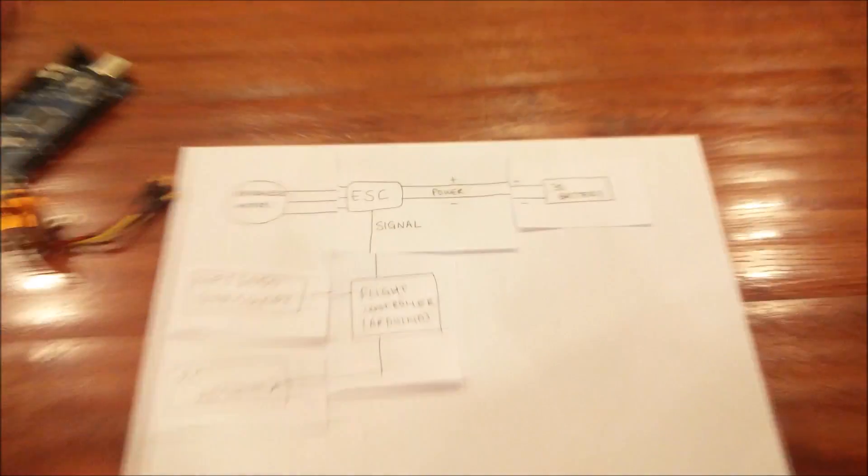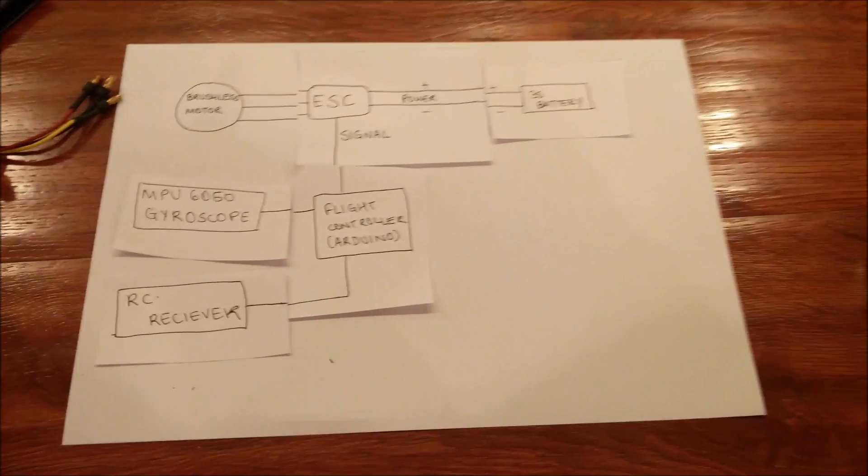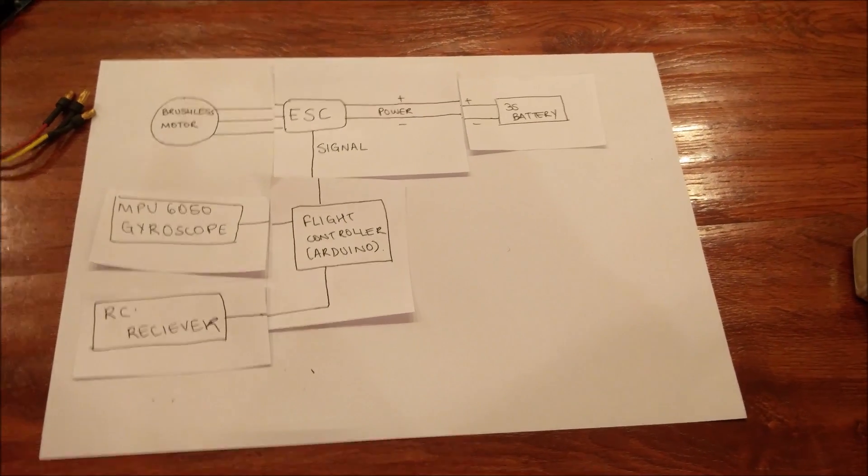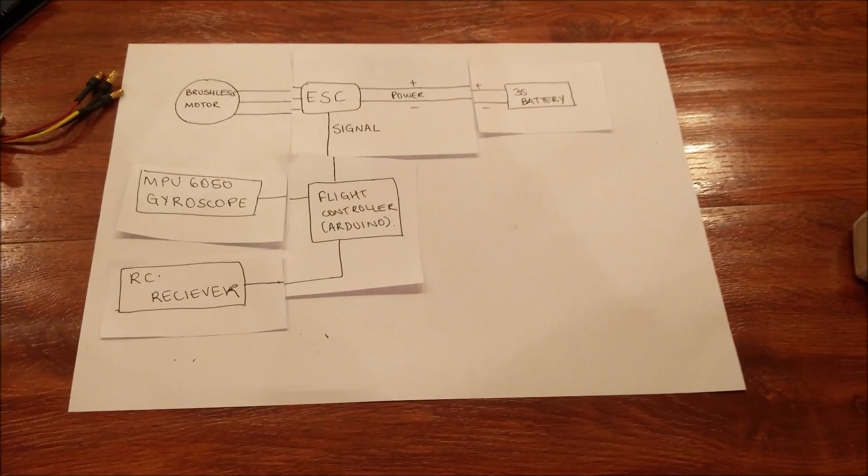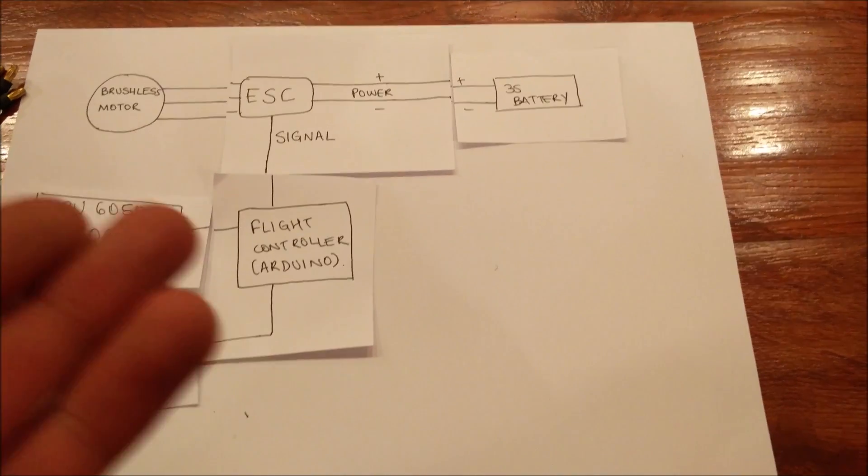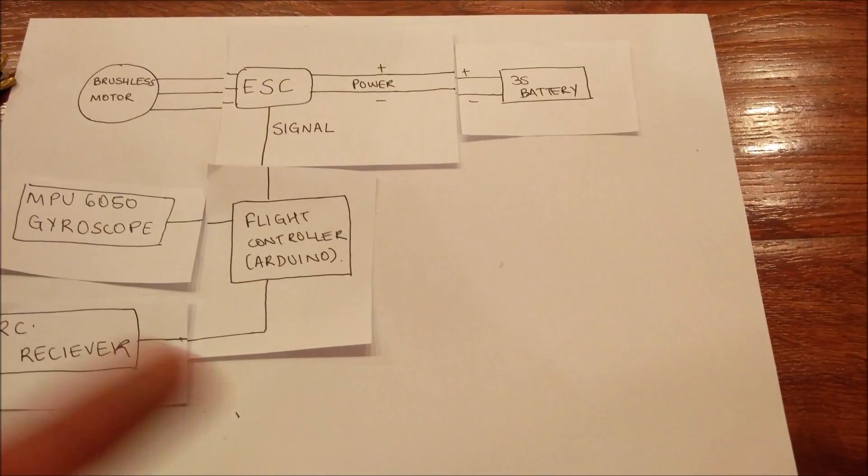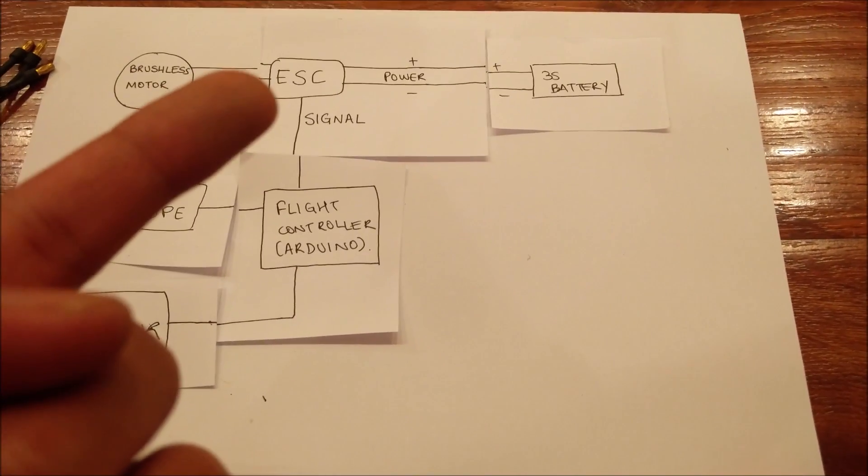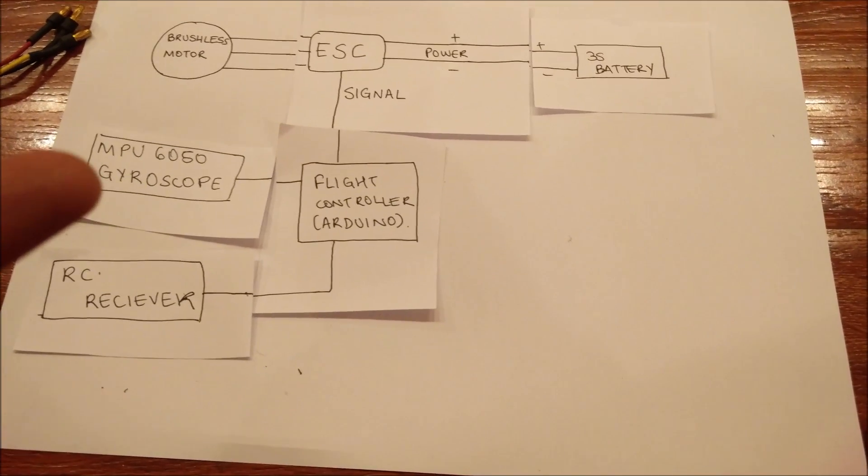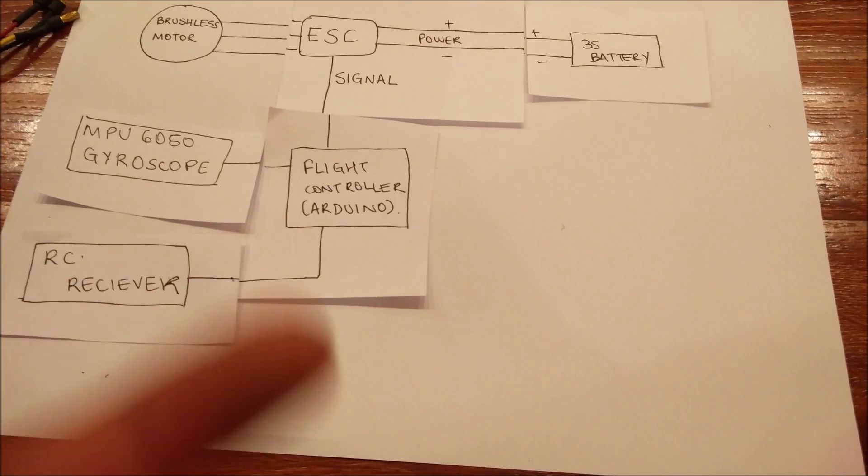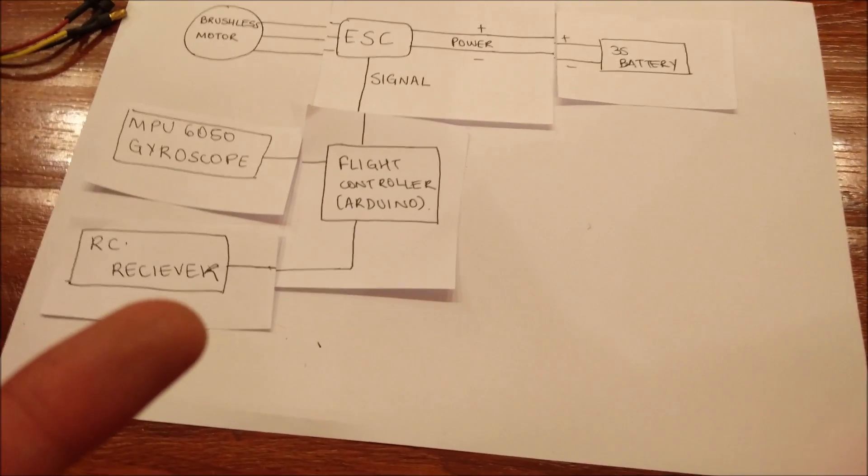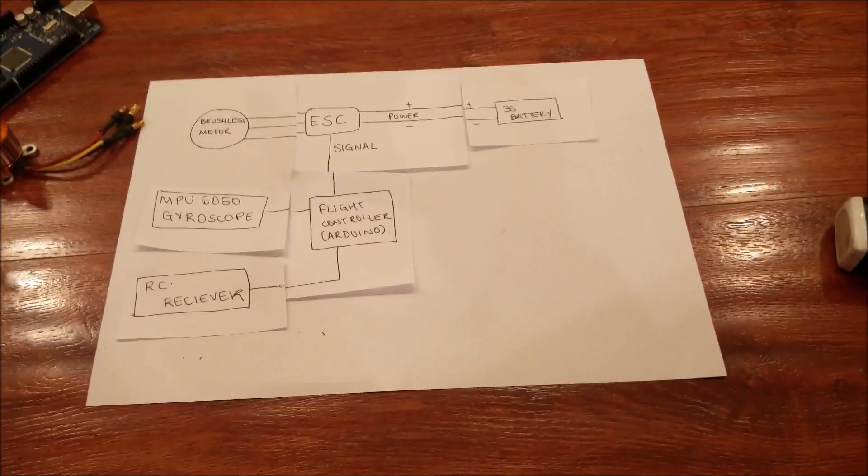Now this on this piece of paper, excluding three motor setups, is pretty much everything that goes behind a drone. The battery which controls the motors through the speed controllers. The flight controller which controls the speed controllers. The gyroscope which keeps a check on the drone's angle at all times. And our RC receiver which receives signals from the transmitter. That is the whole drone.